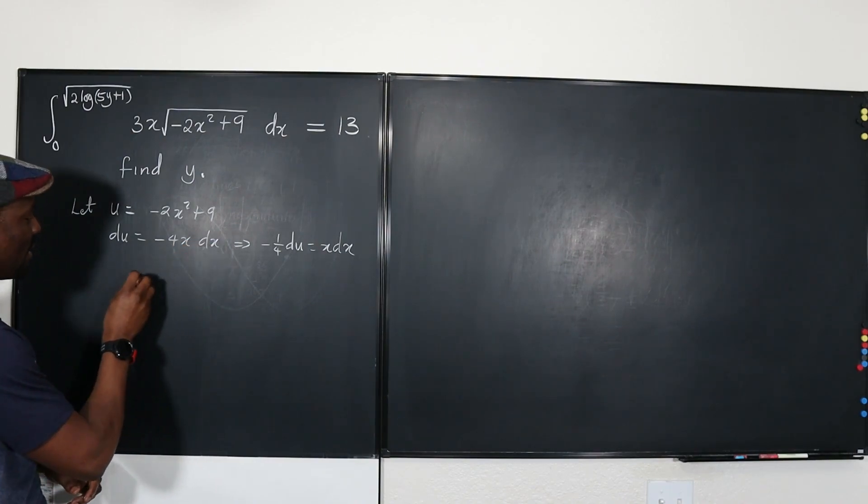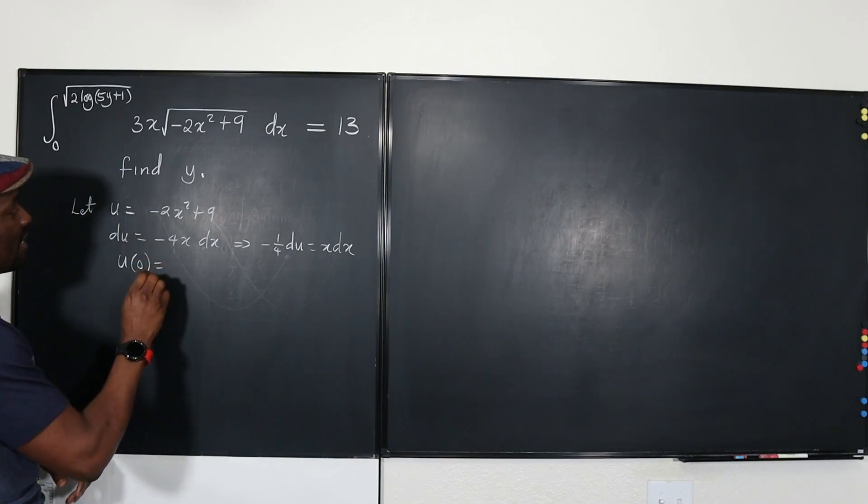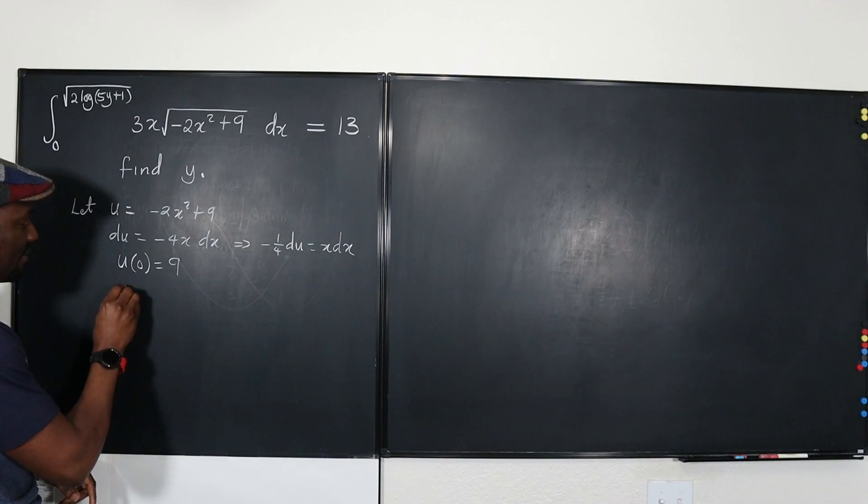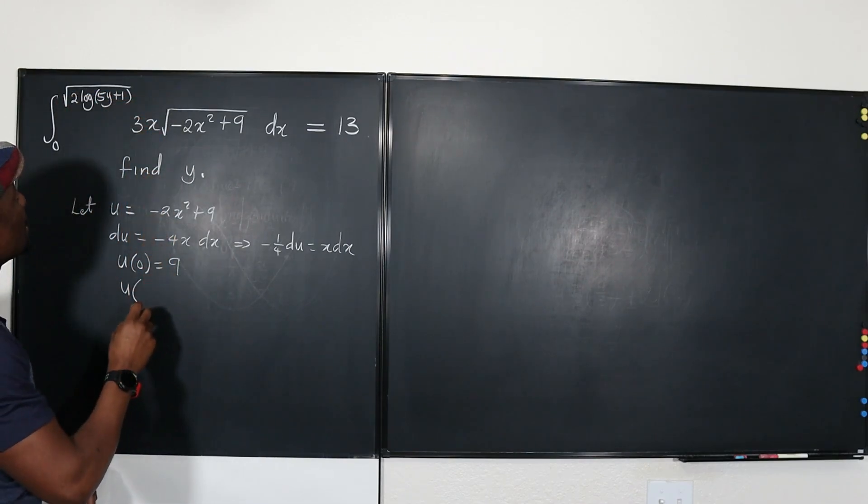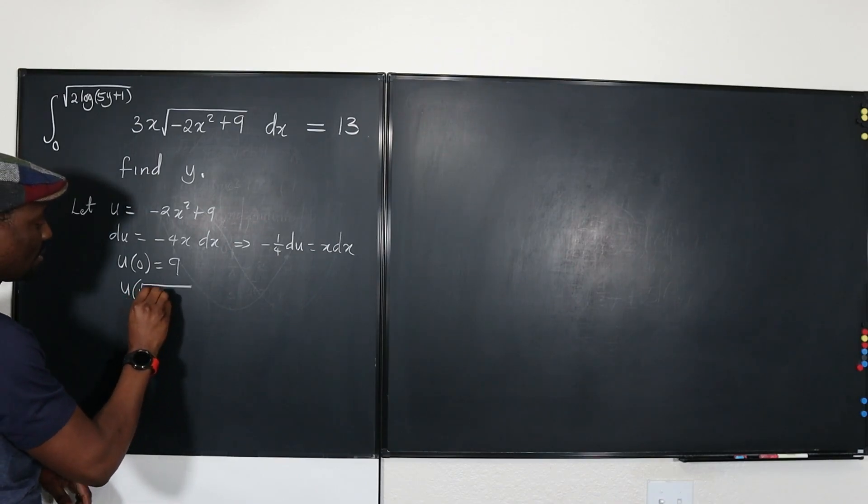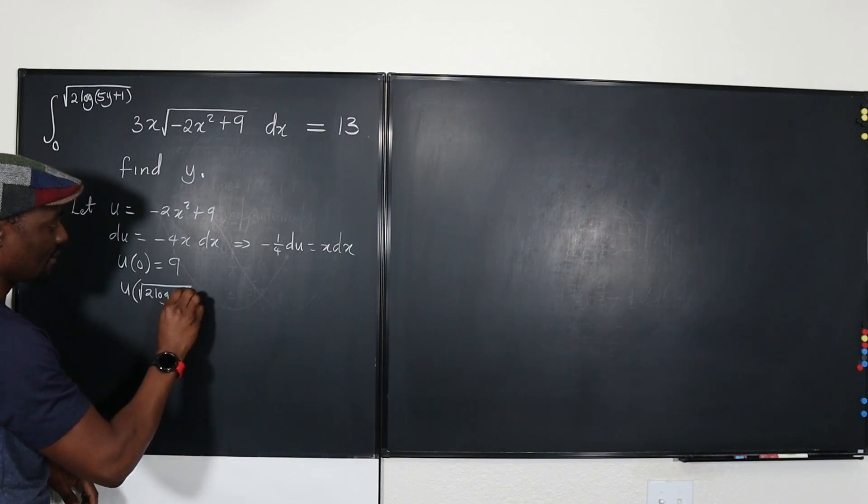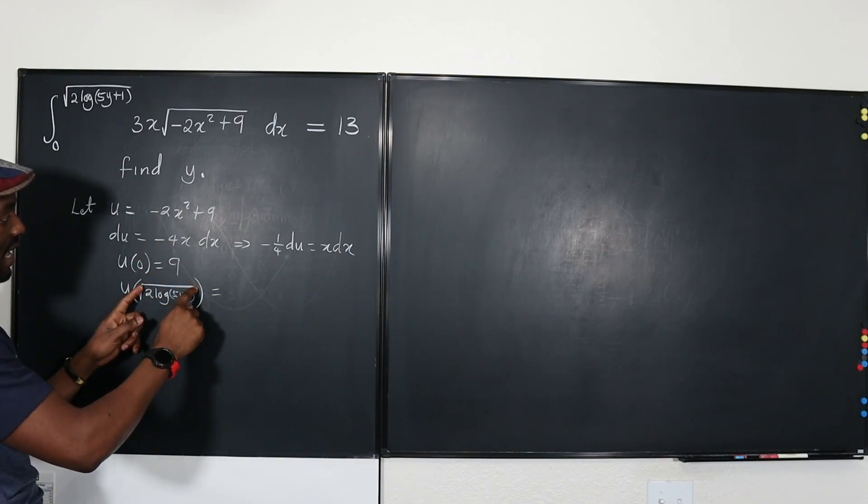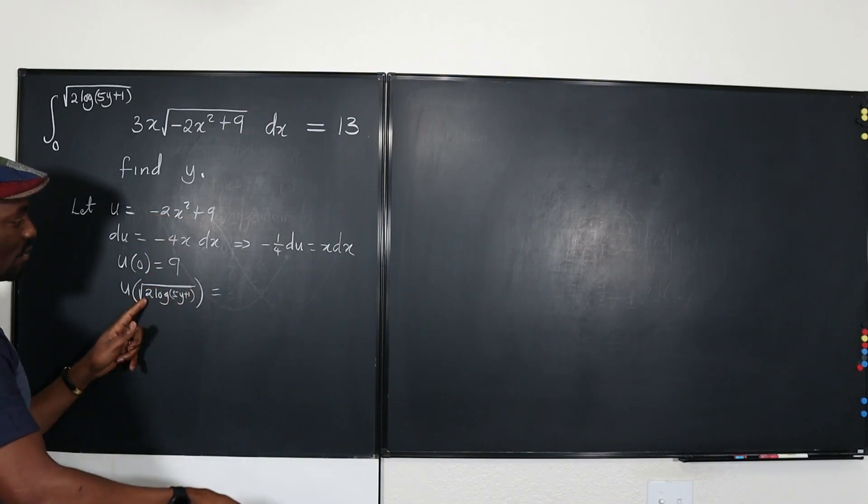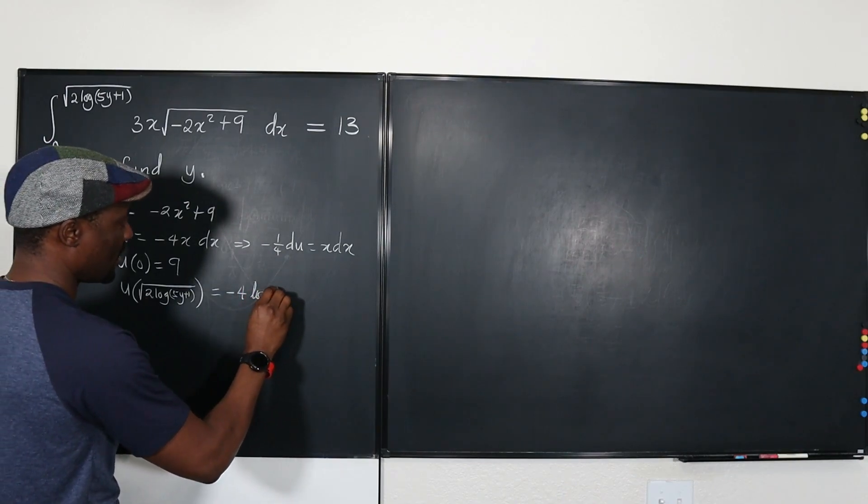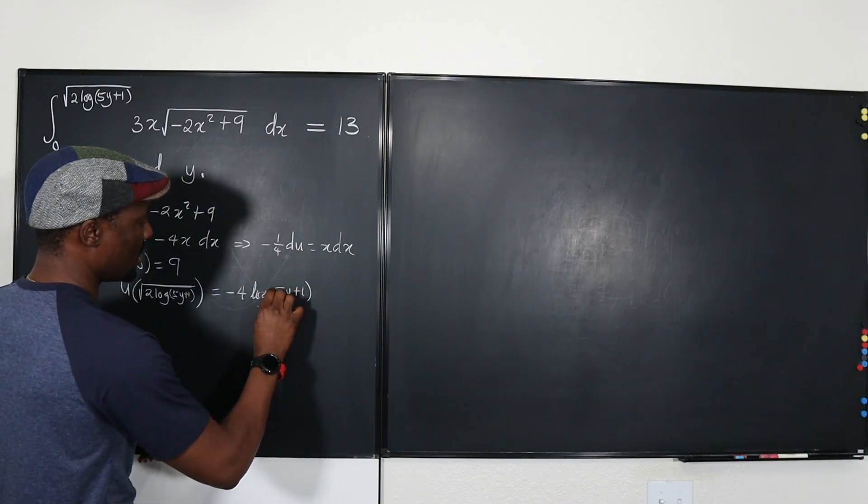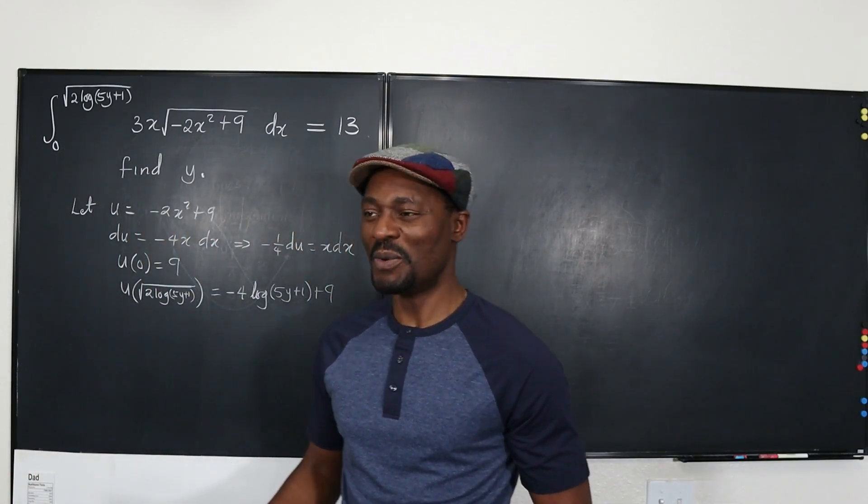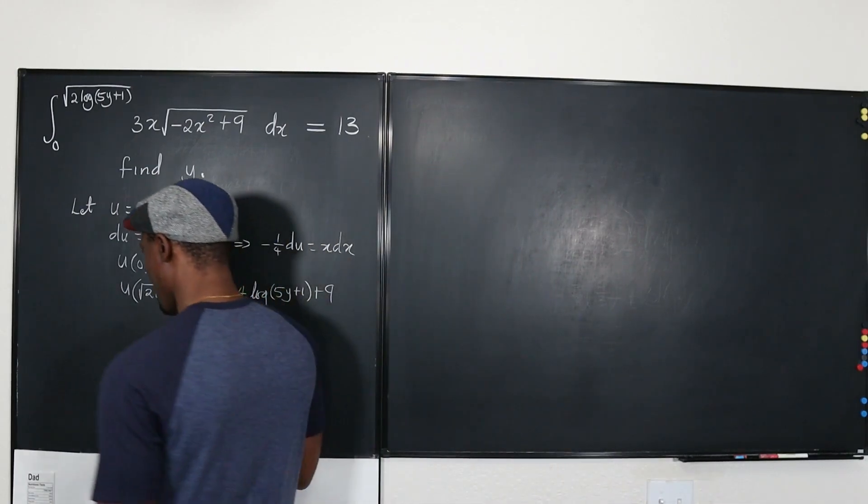Anything else? I need to evaluate u. If I evaluate u at the lower boundary, if I plug in 0 for x, it's going to be negative 2 times 0 plus 9, so I'm just going to get 9. And if I evaluate u at the upper boundary, it's going to be the square root of 2 log 5y plus 1. If I plug this in for x, well, this is going to remove the square root sign. And so I'm going to have negative 2 times 2, which is going to be negative 4 log 5y plus 1 plus 9. So this is what I'm going to have as the upper boundary. Yeah, it looks a bit not so nice. So for now, we're just going to keep writing it. Let's go.